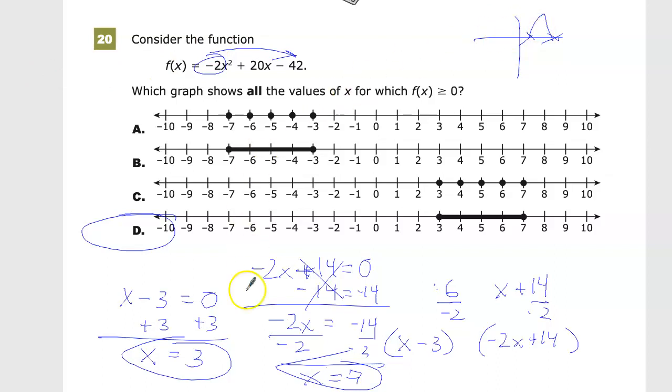Look at the answer choices. They include the continuous versus discrete distinction - some use dots, some use solid lines. This is a function with all the parts in between the individual numbers, so it's a solid line, not dots.